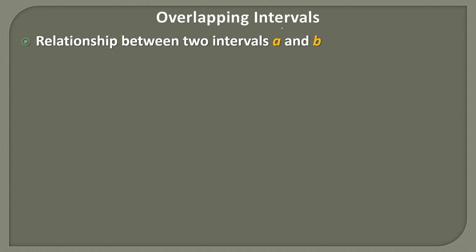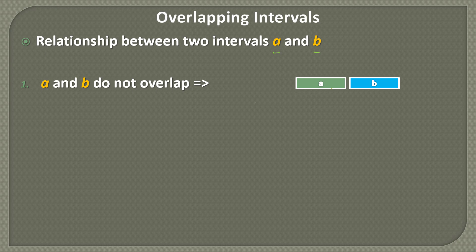For overlapping intervals, we require a minimum of two intervals — let's call them A and B. The first relationship is that A and B do not overlap: A starts and ends, and then B starts and ends separately. For example, 1,3 and 4,5 — these are two intervals that don't overlap. Note that 1,3 and 3,4 would overlap since the end of the first equals the start of the second, but here there's a gap between them.